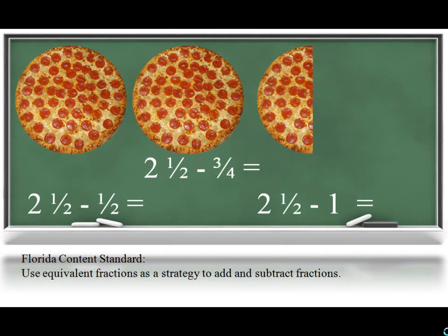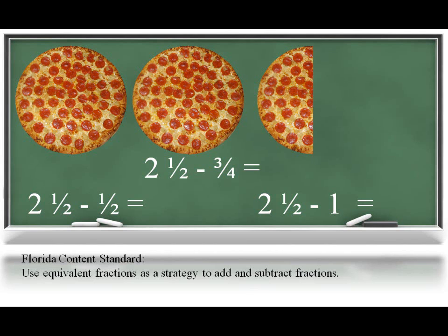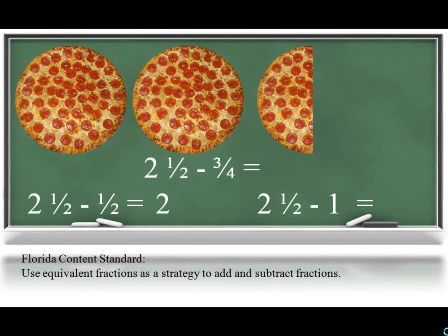Both would be reasonably close. Remember, an estimate is just a quick reference point. If you use one-half for your estimate of three-fourths, you would get about two pizzas left. If you used one whole as the estimate for three-fourths, you would get about one and one-half pizzas left. Both are reasonable estimates.